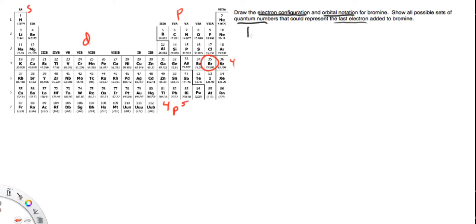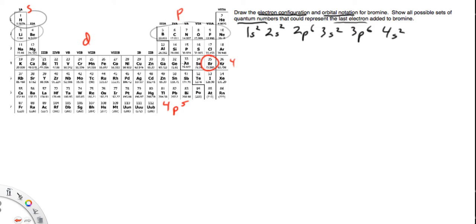So we have 1S2, 2S2, then we're going to go over here to 2P6, and then 3S2, and then we're going to jump over here to 3P6, and then we go down to 4, so that's going to be 4S2, which comes right before 3D10. And then lastly, we've got 4P5. So that is the electron configuration for bromine.